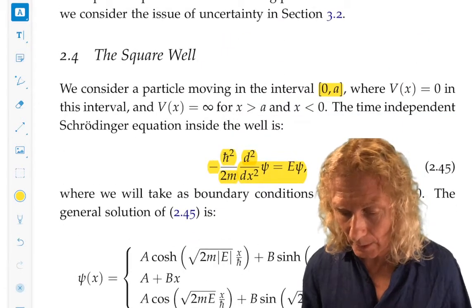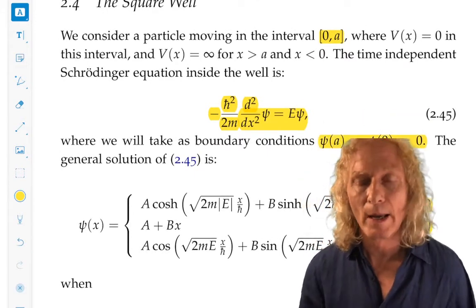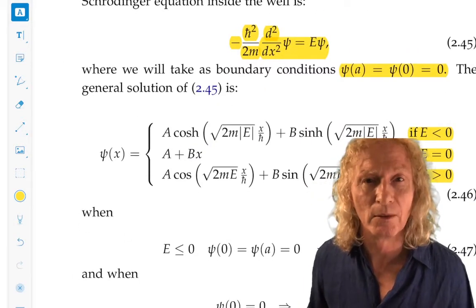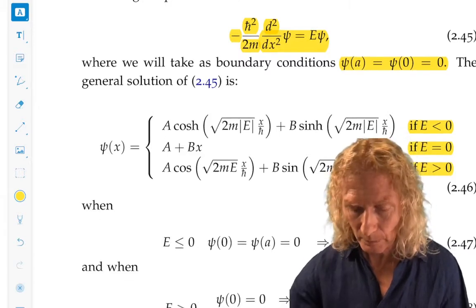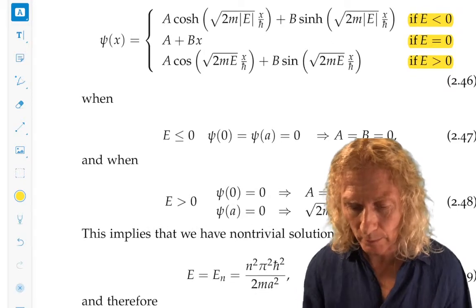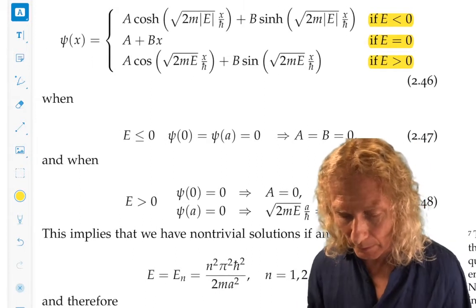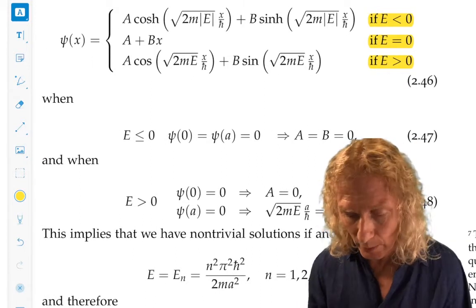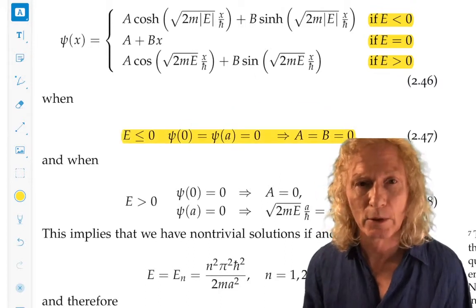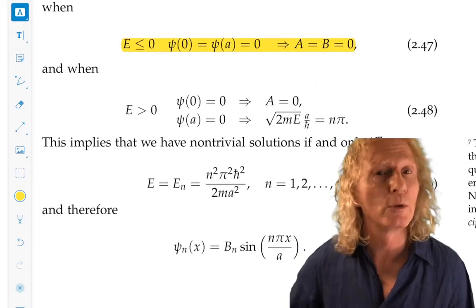Now, one of the things I forgot to say is that we will take boundary conditions. The wave function must vanish at the boundaries. It's zero at the boundaries. So, if we take this solution for these three values of energy, what we find is that for E less than or equal to zero, so the top two cases, the only way the boundary conditions can be satisfied is if A equals B equals zero. So there's no solution, in other words.